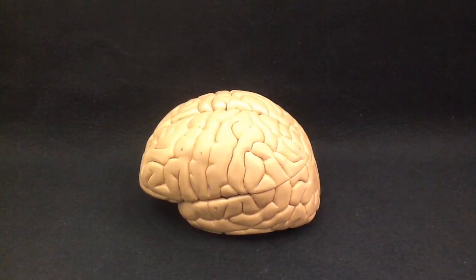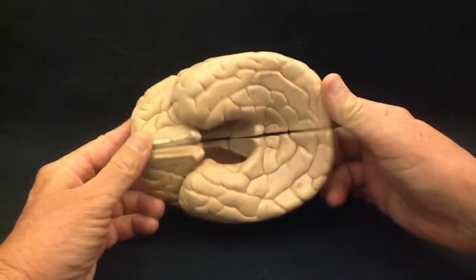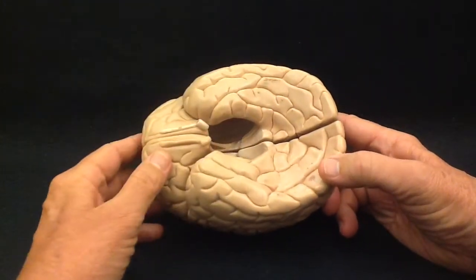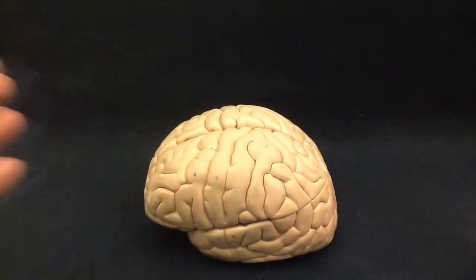Welcome everyone. This video is meant to explore the structure of the cerebrum, one of the four major regions of the brain. Here we have a model of the brain and you can see the other three regions - the diencephalon, the brain stem, and the cerebellum - have been removed.